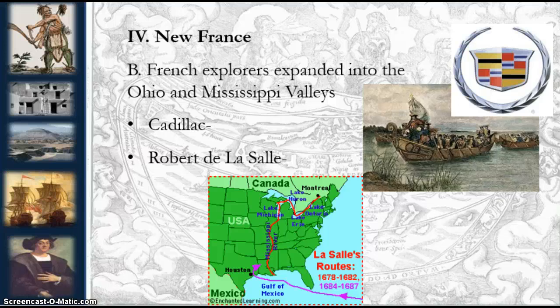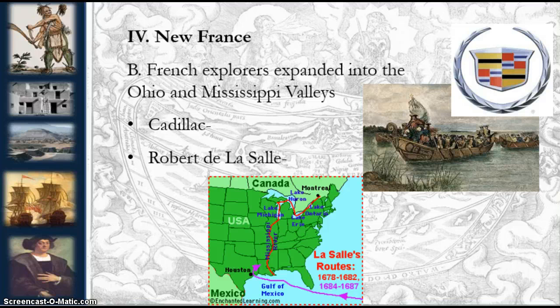Robert de la Salle sailed from Quebec down through the Great Lakes and down the Mississippi River in 1682 with the help of American Indian guides. His goal was to prevent Spanish expansion into the Gulf of Mexico region. His legacy includes many Catholic schools which bear his name, a trend in French foreign policy of making alliances with Native Americans, and he coined the name Louisiana in honor of King Louis XIV.